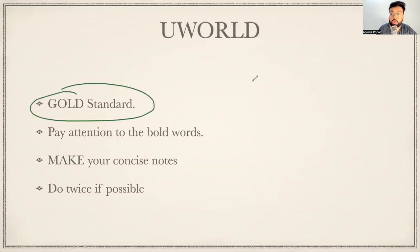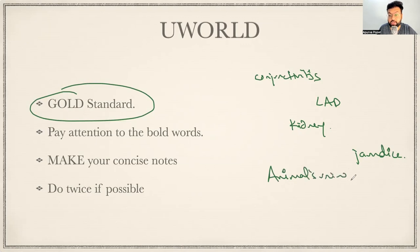While you're solving your UWorld questions, there'll be all the bold words. Don't ignore those bold words. They'll write somebody is having conjunctivitis, and then they'll write somebody's having lymphadenopathy, and after that somebody's having some kidney involvement and somebody's having jaundice. Those are all bold words they'll write, and they'll ask you the most important reservoir for this.